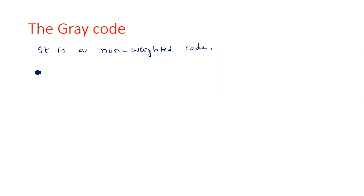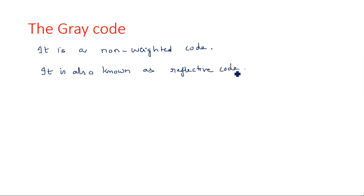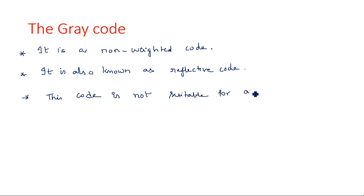Gray code is also known as reflective code. This code is not suitable for arithmetic operations — we cannot perform addition, subtraction, division, or multiplication with gray code because it is a non-weighted code. It is not a BCD code; it is a cyclic code.